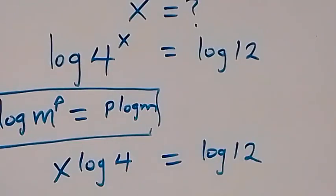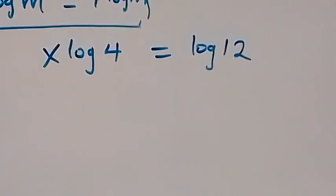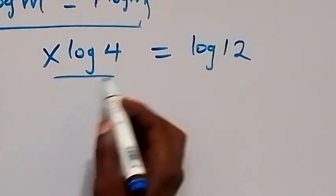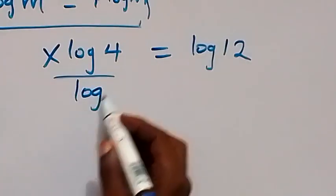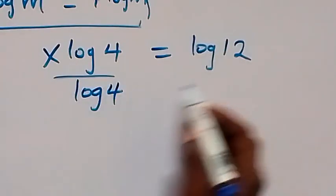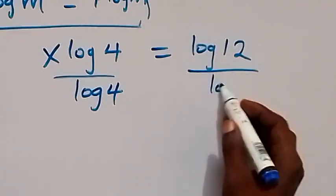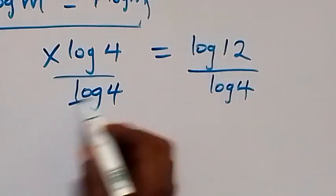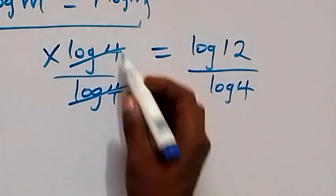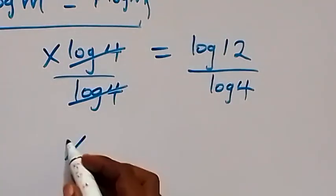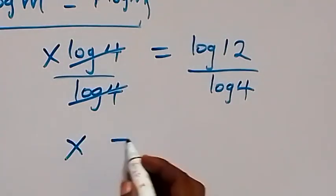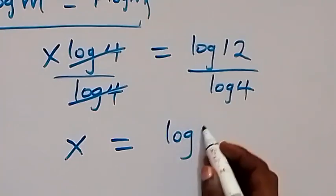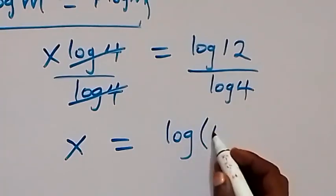In the next step we can divide both sides by log 4 to cancel log 4 here. So we divide this side by log 4 and also divide that side by log 4, so log 4 cancels out, and we have x left here, which equals log 12 over log 4.